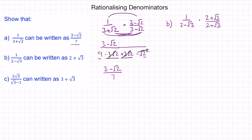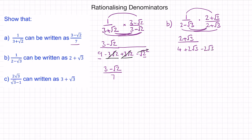When we multiply our numerator, we have 1 lot of 2 plus root 3. And for our denominator, we have 2 times 2, which is 4. And then 2 lots of root 3, so 2 root 3. Minus root 3 times 2, so minus 2 root 3. And then minus root 3 times positive root 3, so minus root 3 squared.